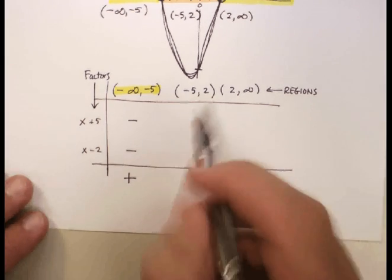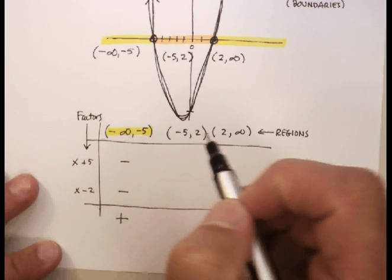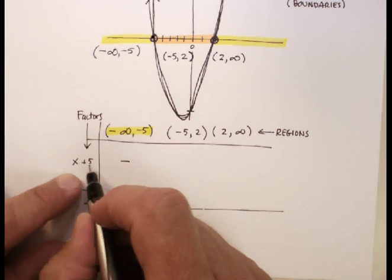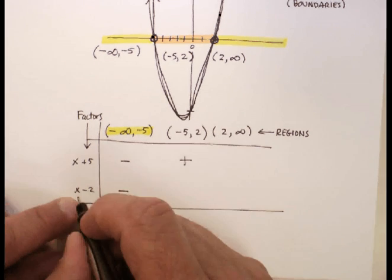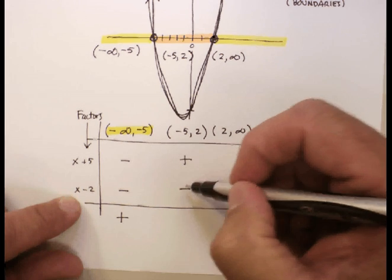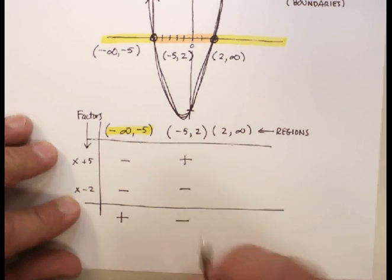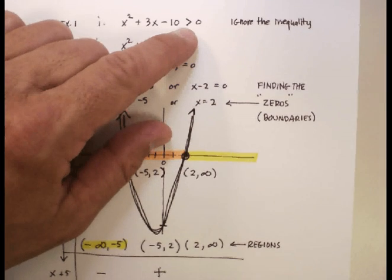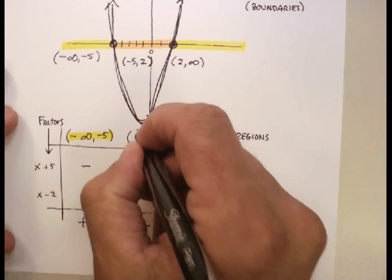Look what happens in this region here. Let's choose, I don't know, let's try zero because that's right in the middle of the region, isn't it? Or close to the middle. So if I go zero plus five, I result in a positive number. Zero minus two, I get a negative number. When you multiply a positive times a negative, you get a negative number. Is a negative number greater than zero? The answer is no. This region does not work.